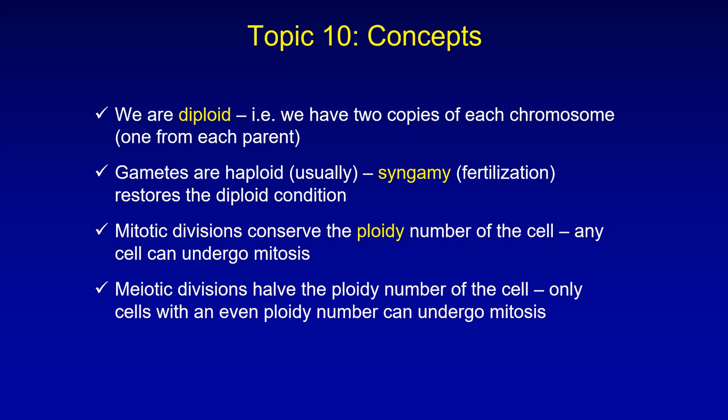To summarize the terminology: animals are diploid with two copies of each chromosome — one from your father, one from your mother. Gametes are haploid. Syngamy or fertilization is where cells combine and we return to the diploid condition. Mitotic divisions always conserve ploidy, and meiotic divisions always cut ploidy in half — starting with one diploid cell that gives rise to four haploid cells.